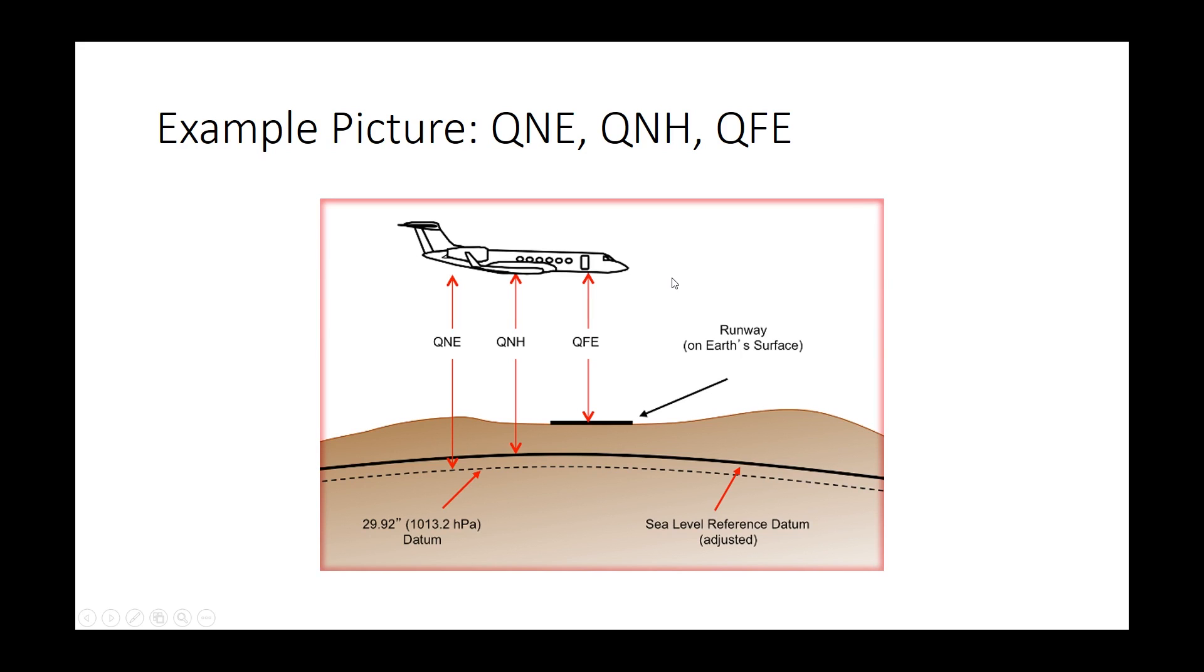Here I have an example picture of the QNE, QNH, and QFE. You can see here the QNE is the height between you with the setting 1013.2 hPa, the QNH is the height between you and the sea level, and the QFE is the height between you and the earth surface, runway, whatever.